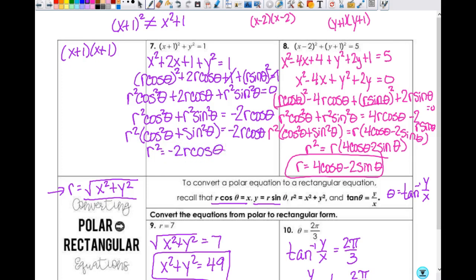So now I just have r squared equals negative 2r cosine theta. I need r by itself. Well, I have an r right here. Divide by r, and I get r is equal to negative 2 cosine theta. And I am done. Good enough? We good?